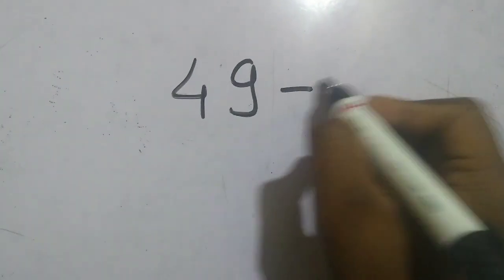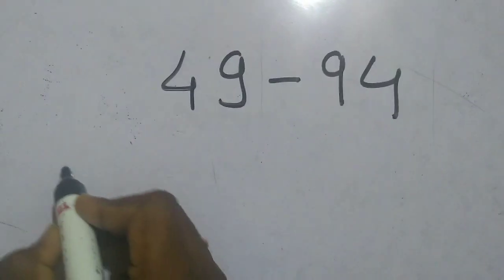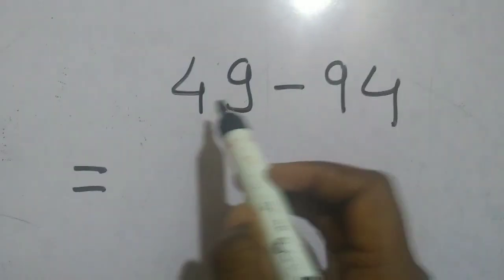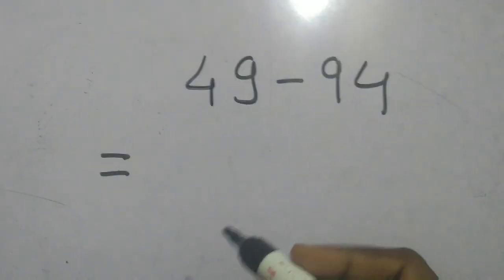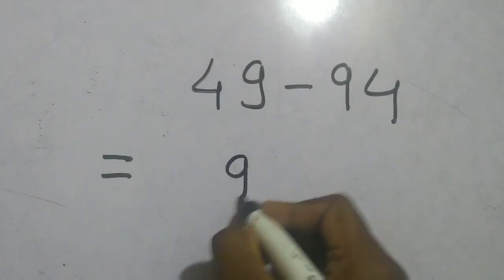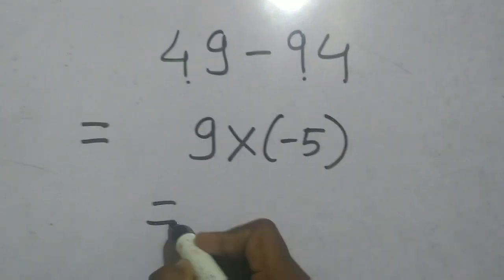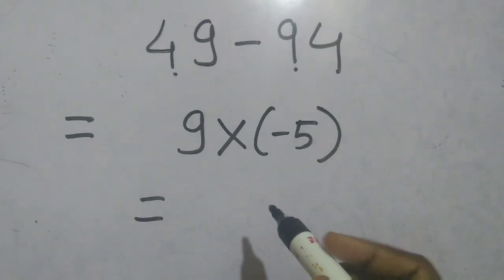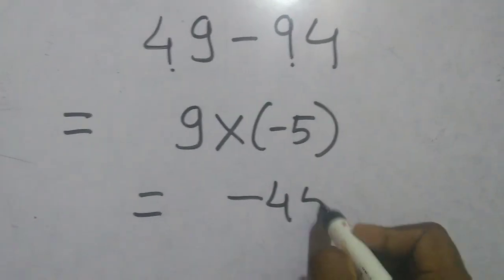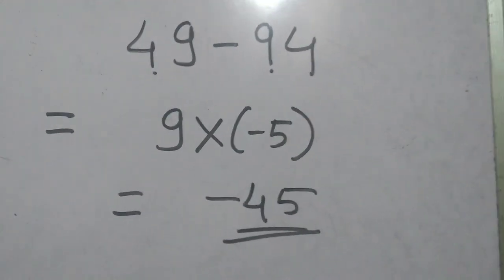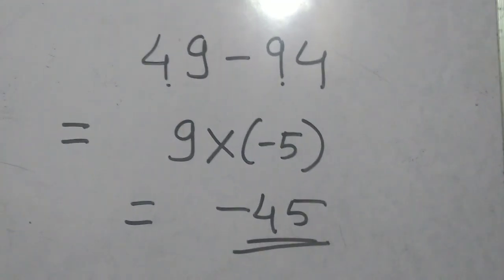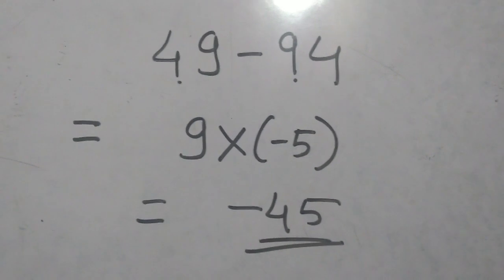Let's solve another example: 49 minus 94. 94 is opposite of 49, so in answer we have to multiply 9 with 4 minus 9 is minus 5, and the answer we will get is minus 45. Check it guys.